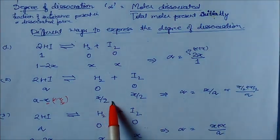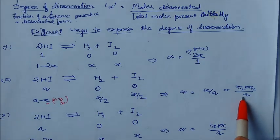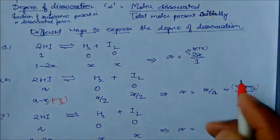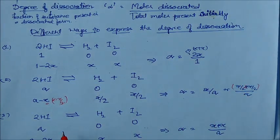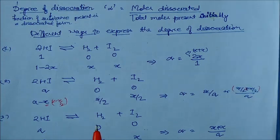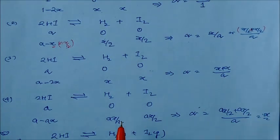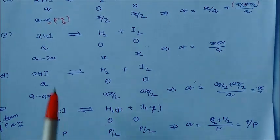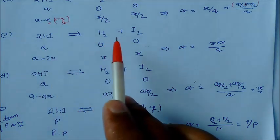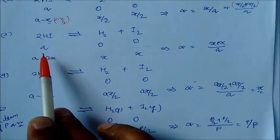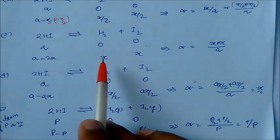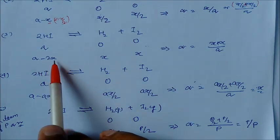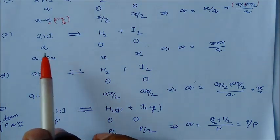In another notation, alpha = (x/2 + x/2 + a) divided by a. In the third case, for 2HI ⇌ H₂ + I₂ with initial moles 'a', we write the equilibrium amount of 2HI as a minus 2x, and H₂ and I₂ each as x.